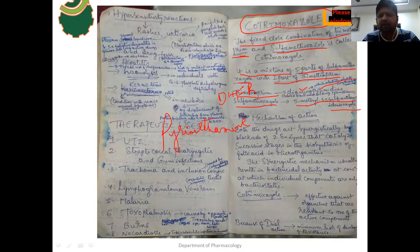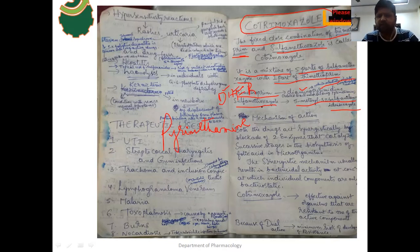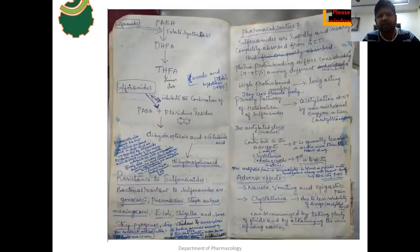Coming to mechanism of action: both drugs act synergistically by blockade of two enzymes that catalyze successive steps in the biosynthesis of folic acid in the microorganism. PABA is converted into dihydrofolic acid (DHFA) with the help of folate synthetase, and then DHFA is converted into tetrahydrofolic acid (THFA) with the help of dihydrofolate reductase (DHFR).